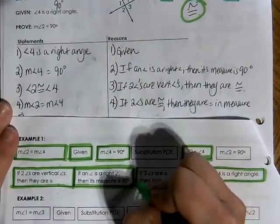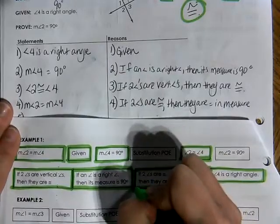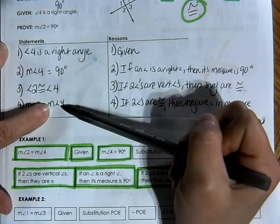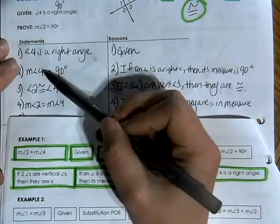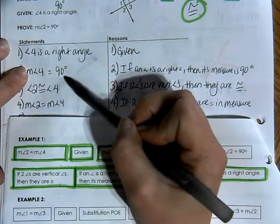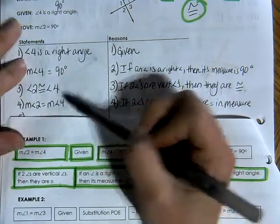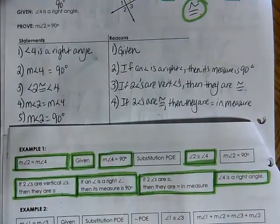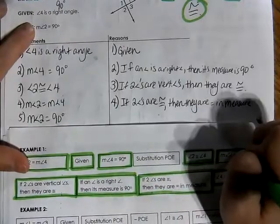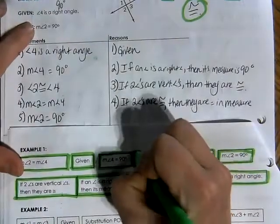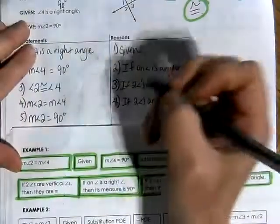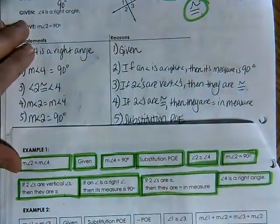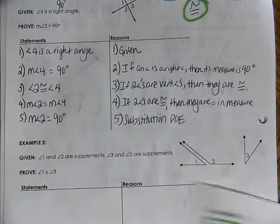If two angles are congruent, then they are equal in measure. We also know that the measure of angle four equals 90 degrees. So what we can do is a replacement — I can replace the measure of angle four with 90 degrees to say the measure of angle two equals 90 degrees. That's what I wanted to prove, and I write that because I did a substitution — the substitution property of equality. And that is the first proof, and we are done.